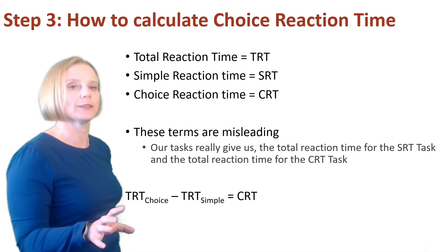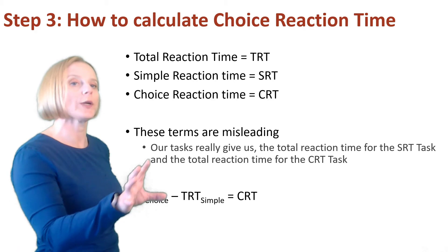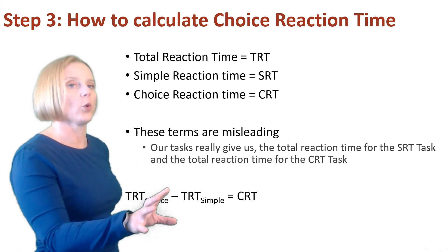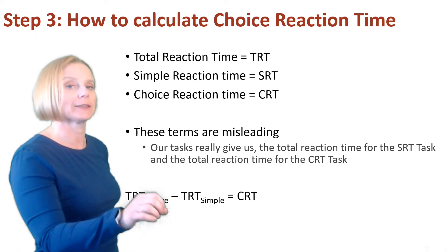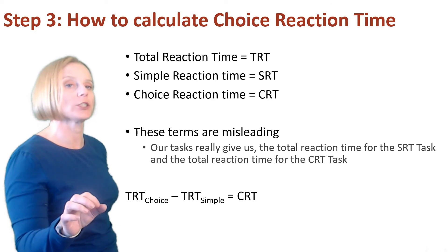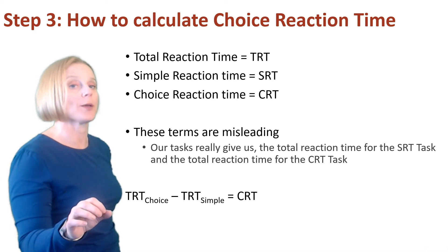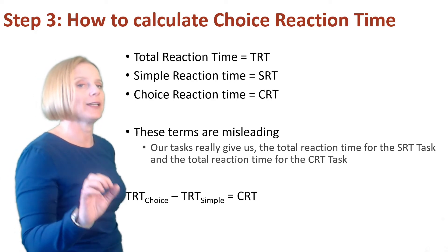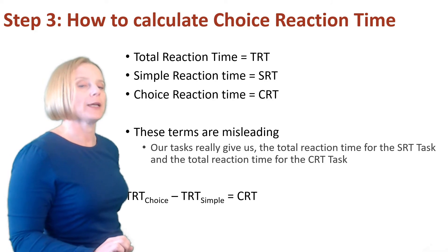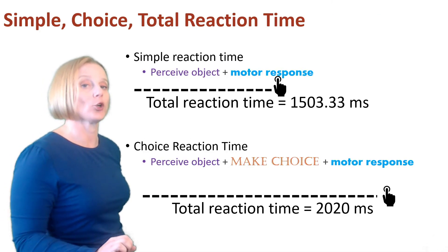Our tasks really give us the total reaction time for the SRT task and the total reaction time for the CRT task, and total reaction time for choice minus total reaction time for simple equals the amount of time it takes us to make a choice.